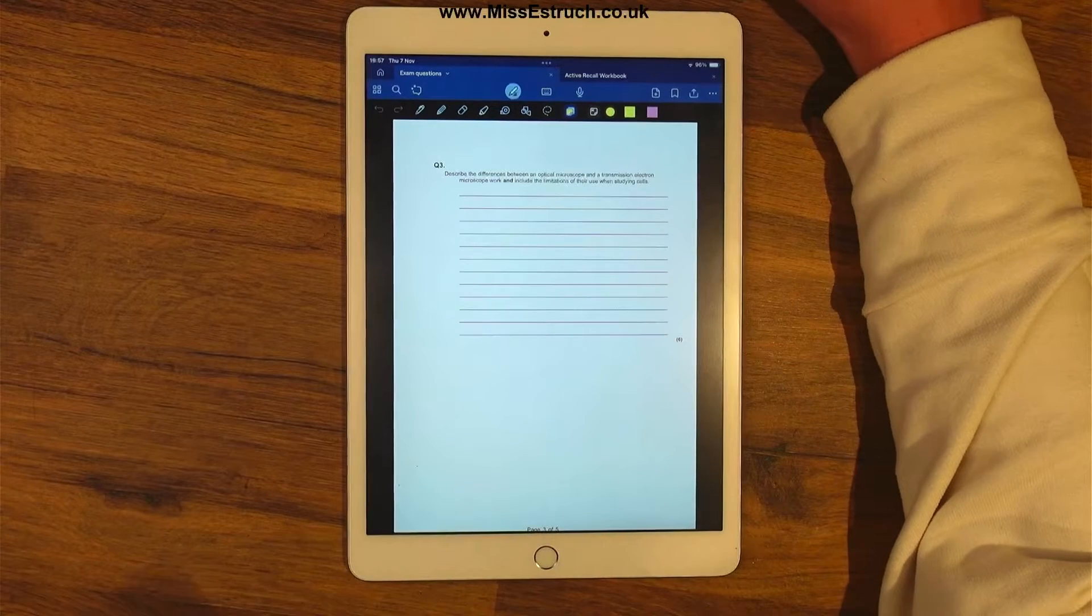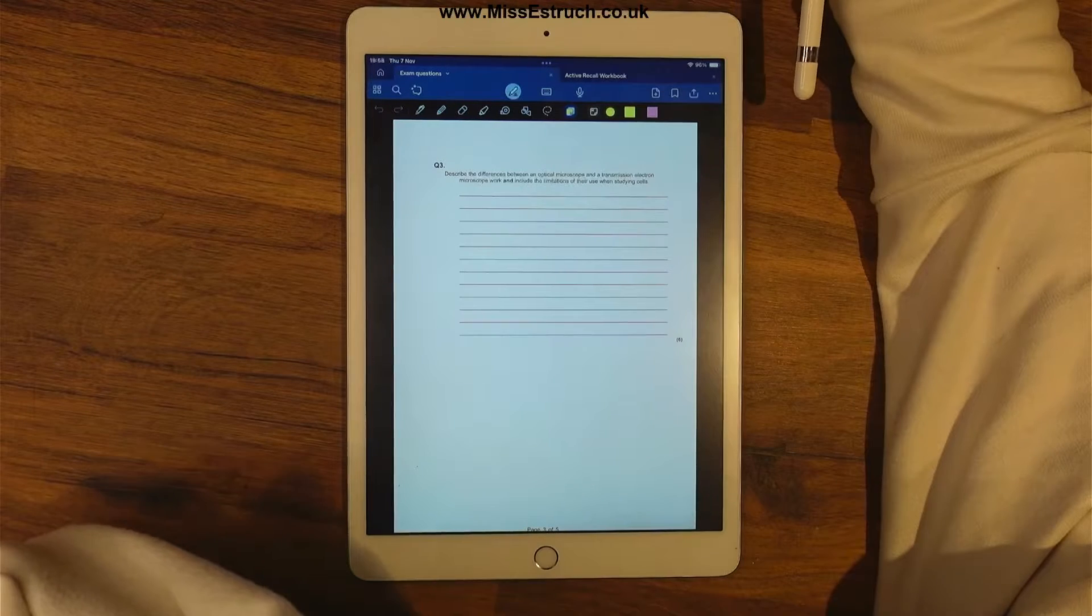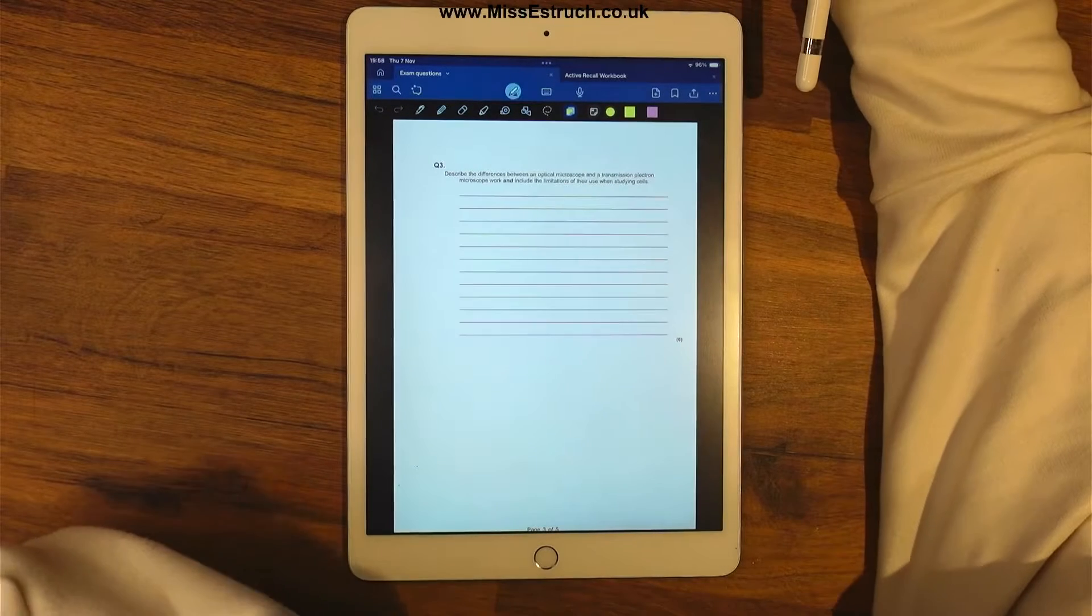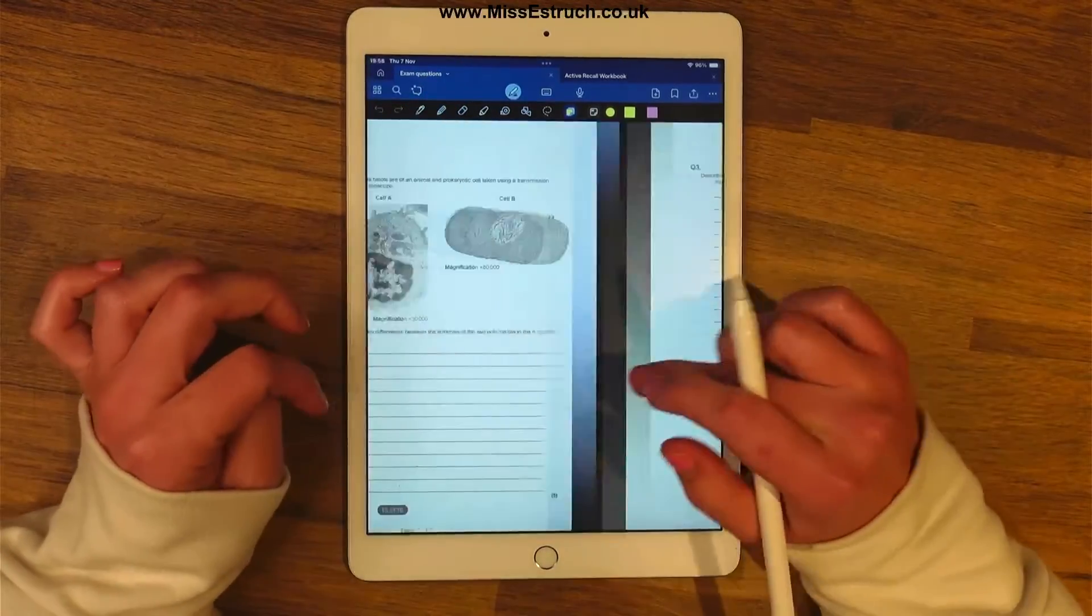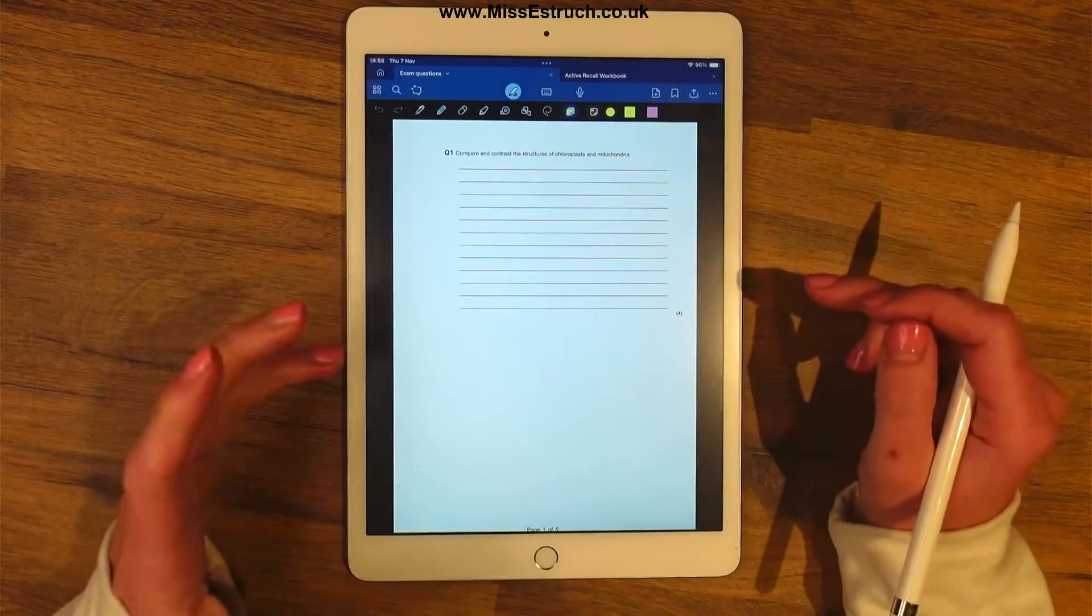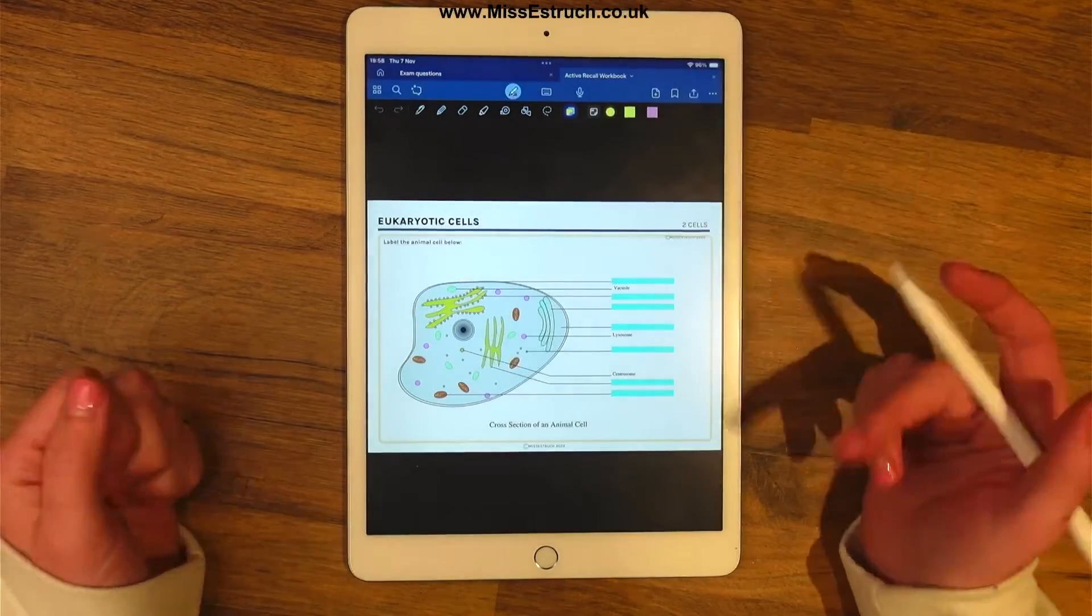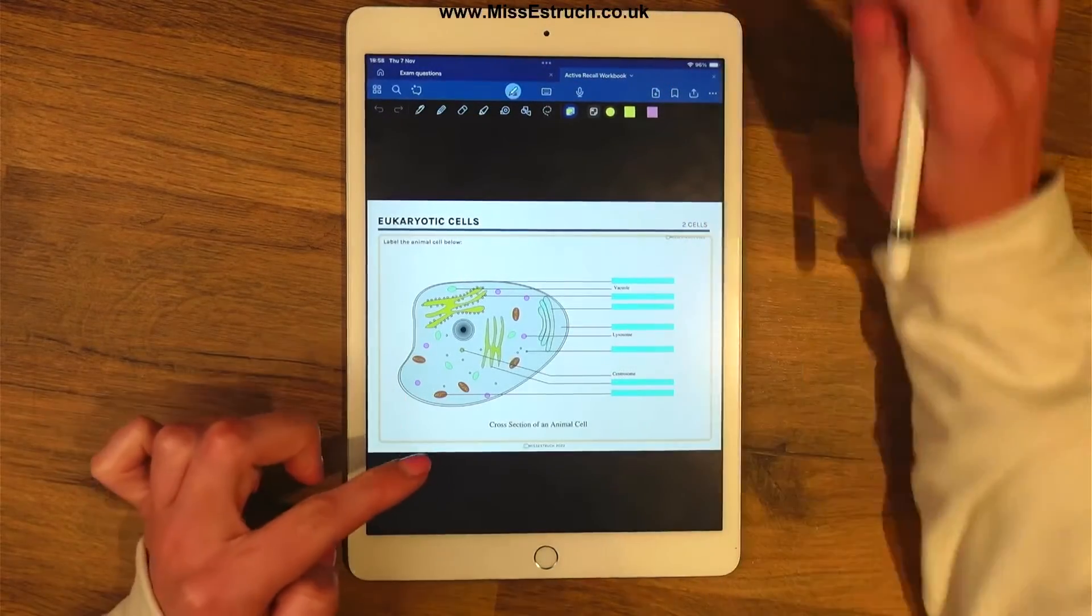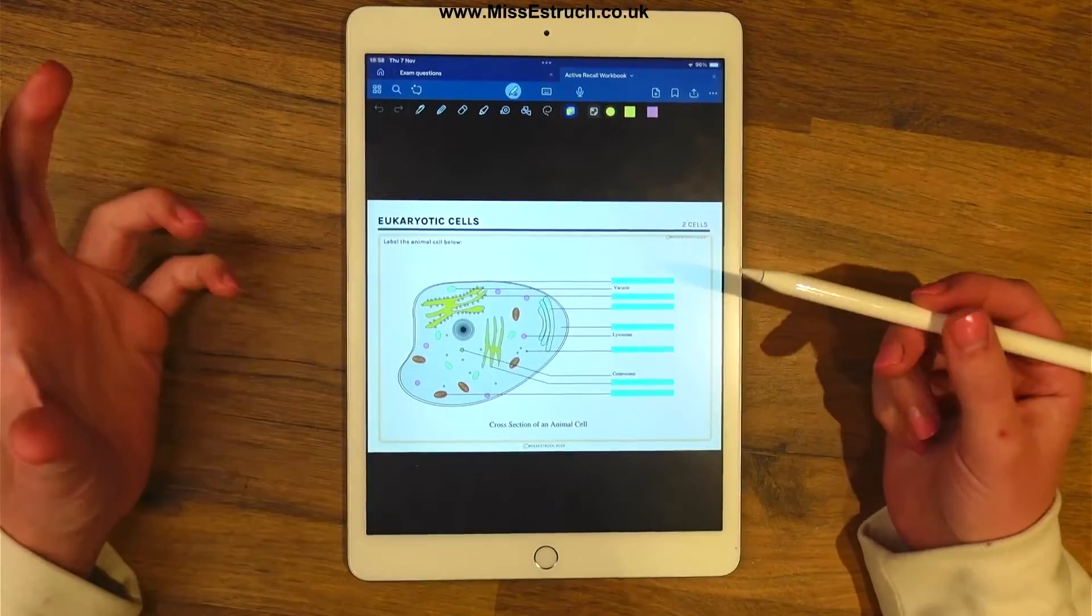Hey everyone and welcome to the live today. Today we're going to be going through cells and we're going to do a mixture of things from exam questions to some short answer questions as well. In fact, I'm just going to start by looking at can we label this cell. So here we have an animal cell, eukaryotic cell.